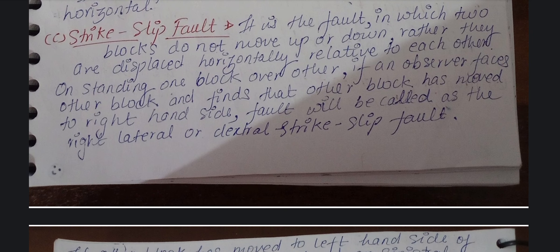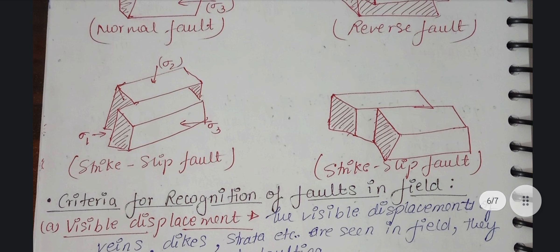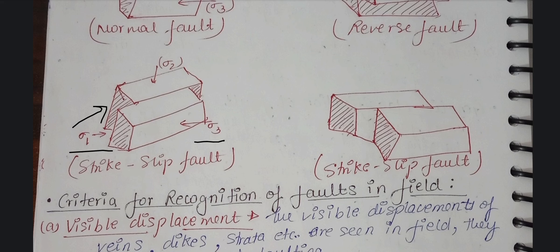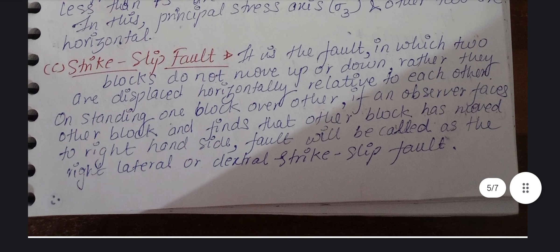Now let's go ahead to strike-slip fault. In a strike-slip fault, the two rock blocks do not move up and down; rather, they displace horizontally. Normal fault and reverse fault involve up-and-down movement, while strike-slip fault involves horizontal movement. If an observer faces the other block and finds it has moved to the right-hand side, the fault is called a right-lateral or dextral strike-slip fault. In this case, sigma 1 and sigma 3 act in opposite directions horizontally, and sigma 2 is vertical.